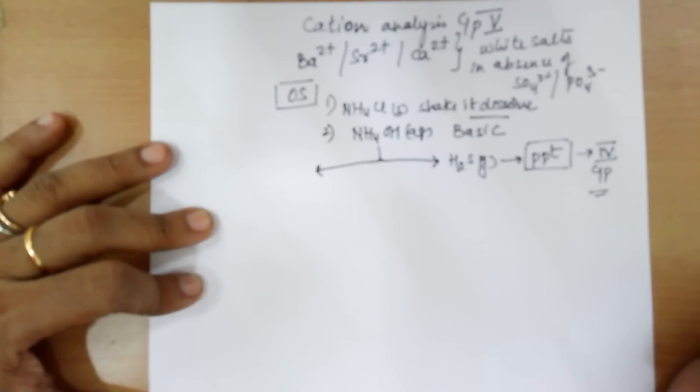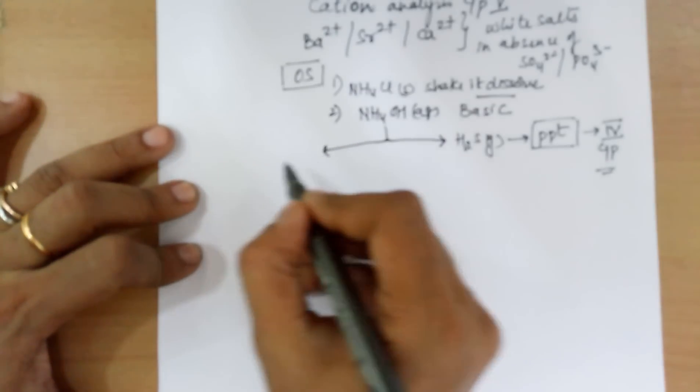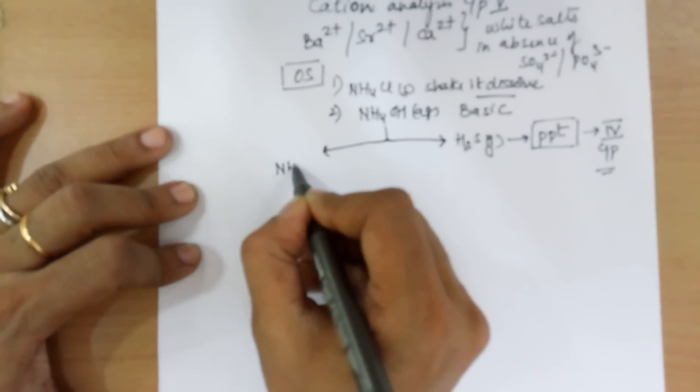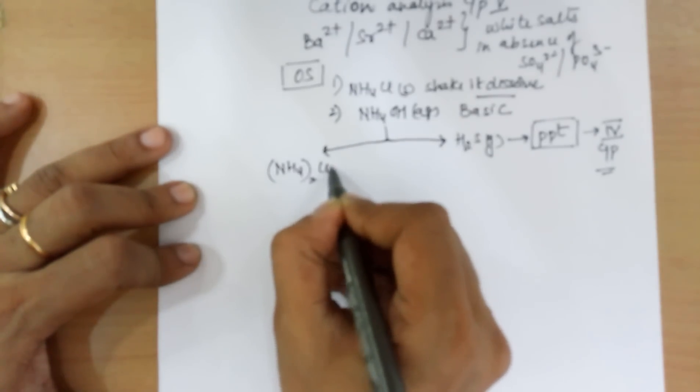But right now, since we are doing group 5, I go to the other half of it. In the other half, you can add ammonium carbonate solution.